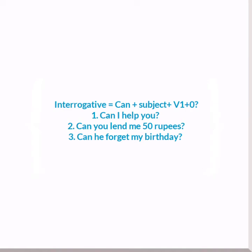Now let's move on to interrogative sentences. The first interrogative sentence is: 'Can I help you?' — which is an offer. 'Can you lend me 50 rupees?' — meaning can you give me 50 rupees?